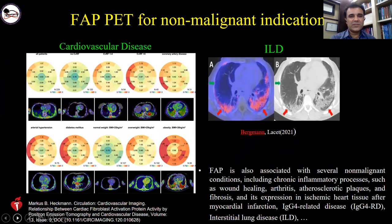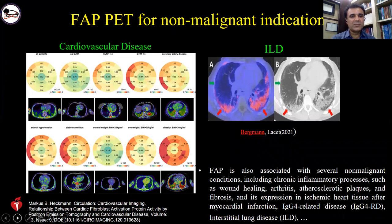It seems that false positive fibrotic processes on FAPI are inevitable, but the bright side is that this could be useful for some non-oncological diseases like wound healing, arthritis, arteriosclerotic plaques, and other inflammatory processes. For example, there is a good correlation between number of cardiovascular risk factors and metabolic disease with cardiac uptake on FAPI-CT. There is also a dilemma for differentiating active or non-active fibrotic processes in cases with interstitial lung disease, and FAPI PET-CT could be a good modality for reassessment and monitoring of these patients.